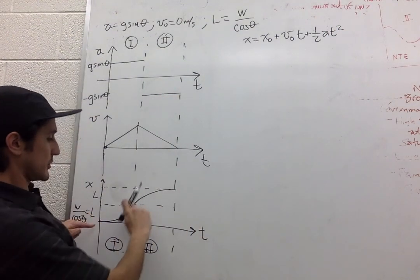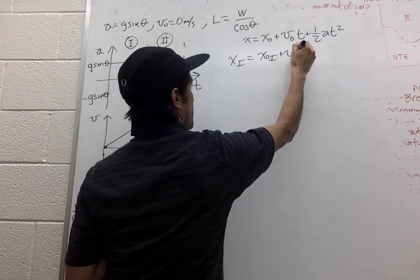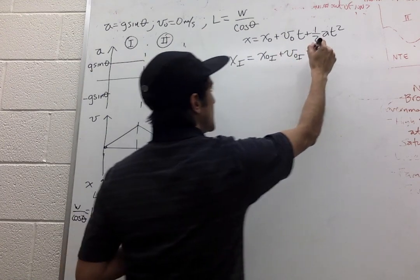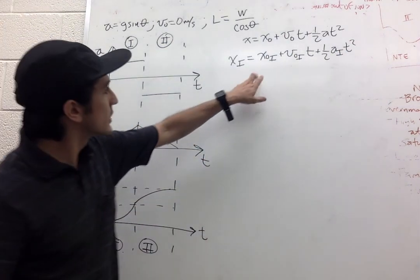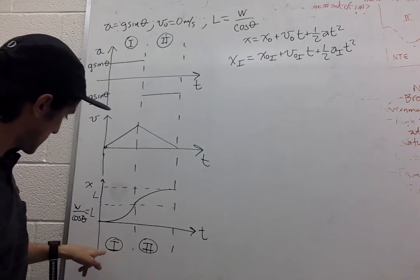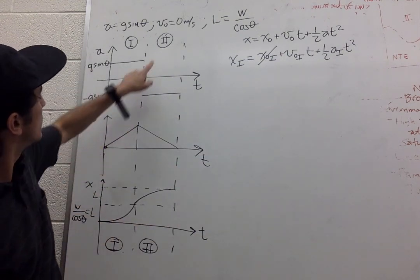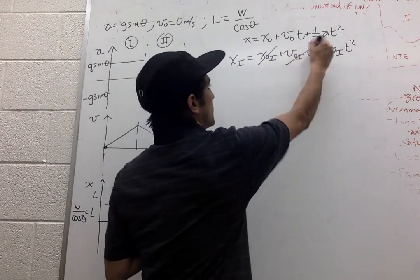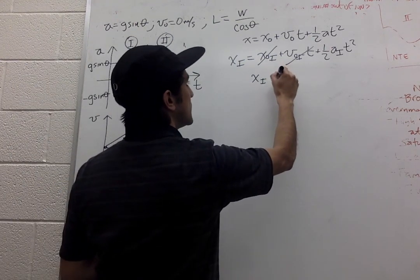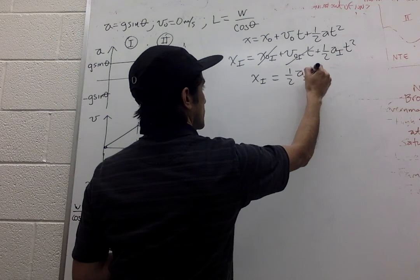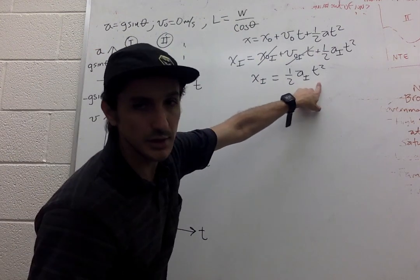So the displacement after the first segment is going to be given by this. The initial position of segment 1 is 0. The initial velocity in segment 1 is given in the problem as 0. So we can get rid of this term. So x1 is 1/2 the acceleration in the first segment times t squared.